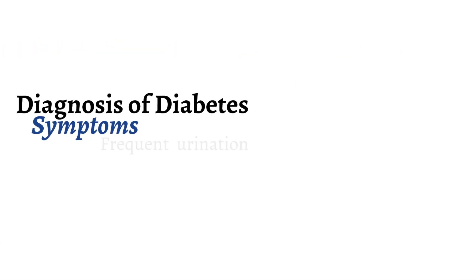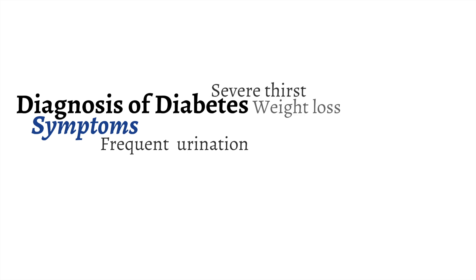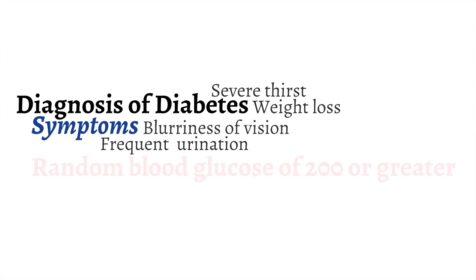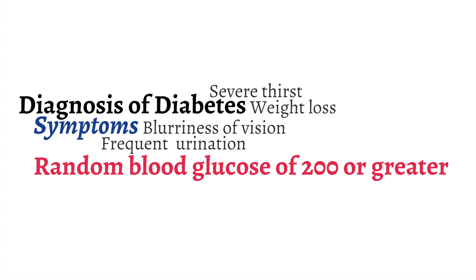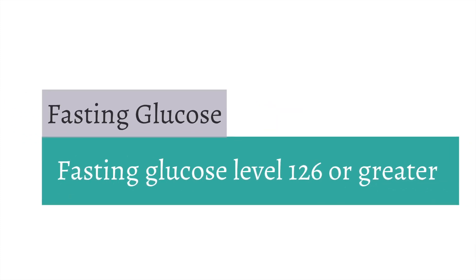The symptoms of diabetes are urinating frequently, severe thirst, weight loss, and blurriness of vision. These symptoms are due to high levels of glucose in the blood, and when present with a random blood glucose test of 200, we have a diagnosis of diabetes. There are alternate forms of testing for diabetes when the symptoms may be subtle.